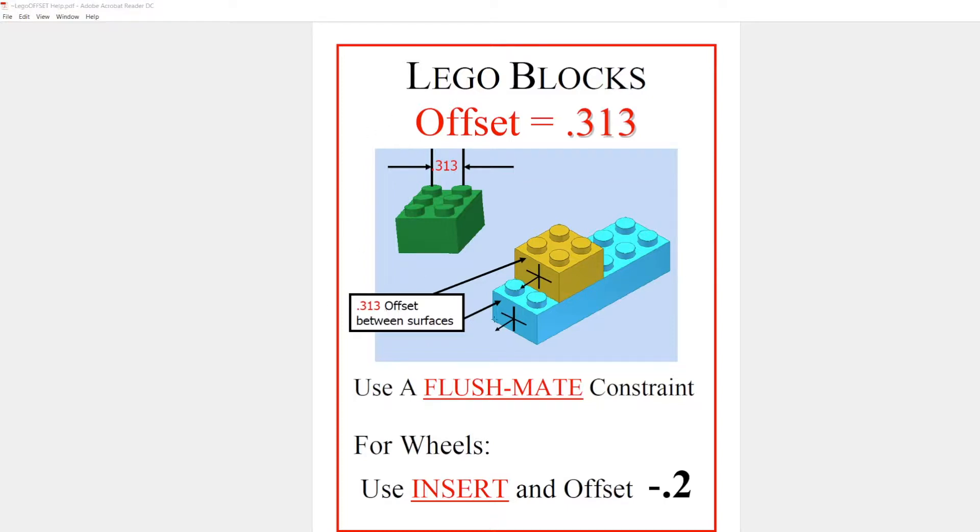It reminds you that 313 is the offset distance between the two surfaces and the amount of pins you want to expose. 0.313 offsets one set of pins.